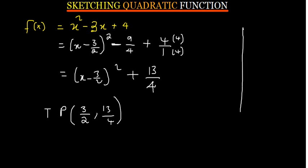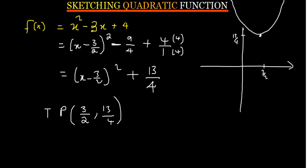The turning point is at (3 over 2, 13 over 4). Because this function is positive, it goes upward from the turning point. This function has no x-intercepts — equating to 0 would give the square root of a negative number. So find the y-intercept by putting x equals 0: that gives positive 4. Sketch the function passing through (0, 4) with turning point at (3/2, 13/4).